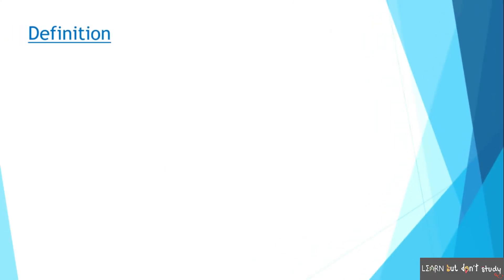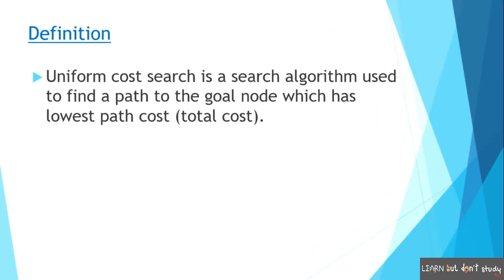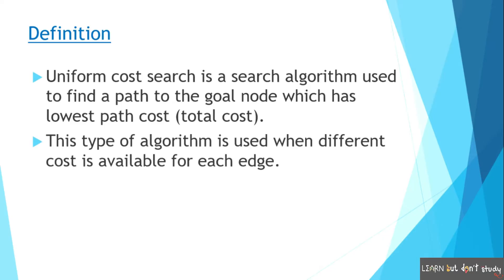Now, let's look at the definition of Uniform Cost Search. In a root node, the goal node will reach the lowest cost and find the lowest cost. This is the search algorithm — the Uniform Cost Search algorithm. If we use this algorithm, there will be different costs.